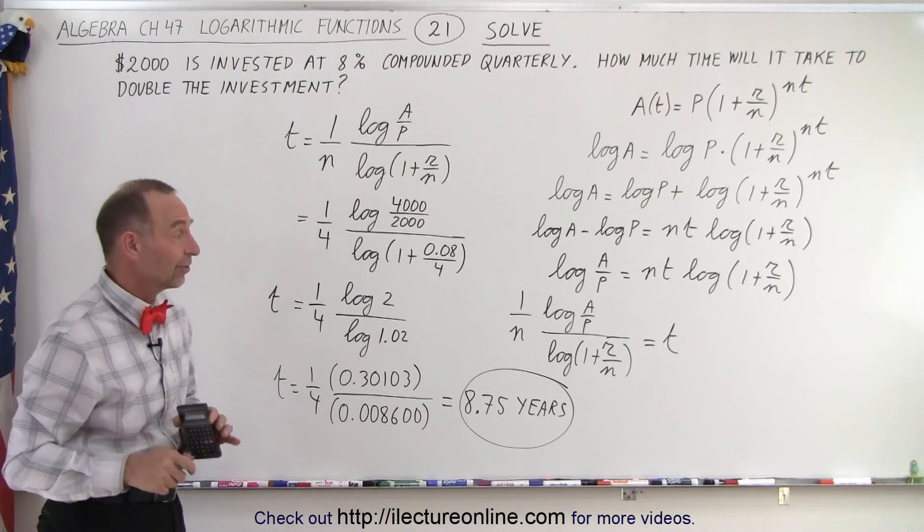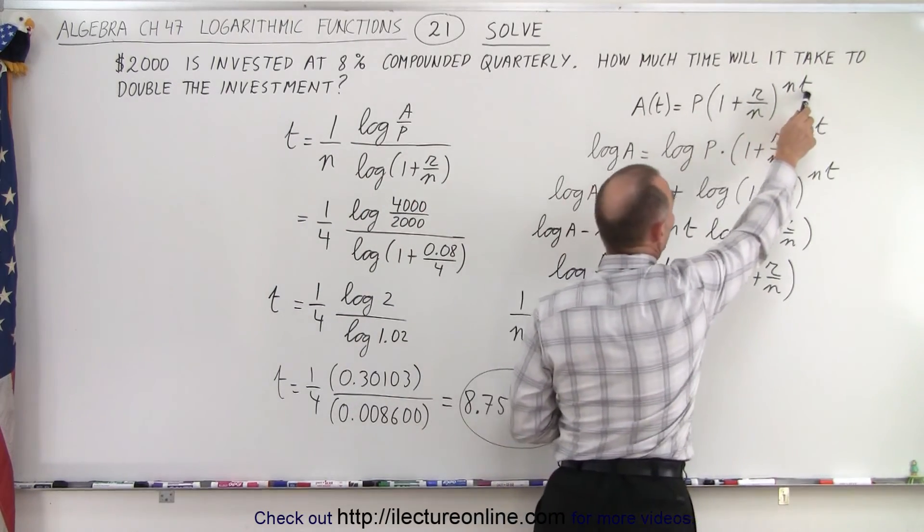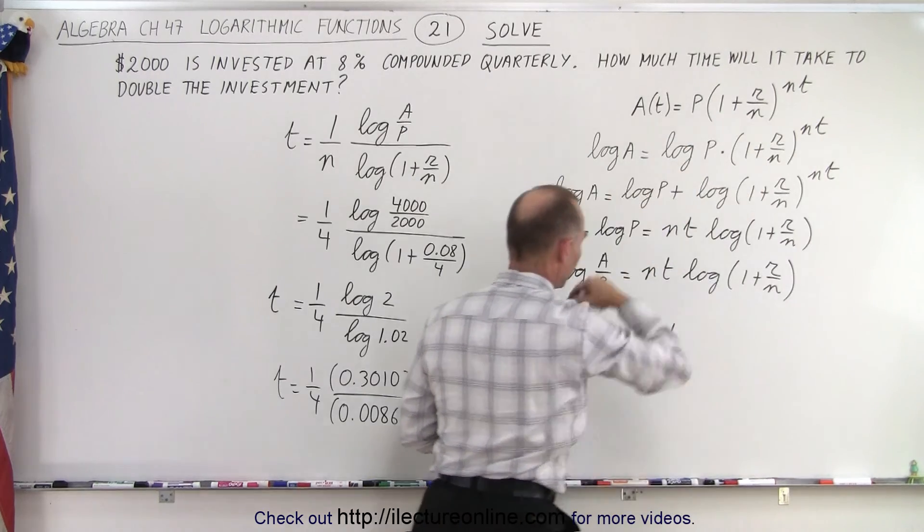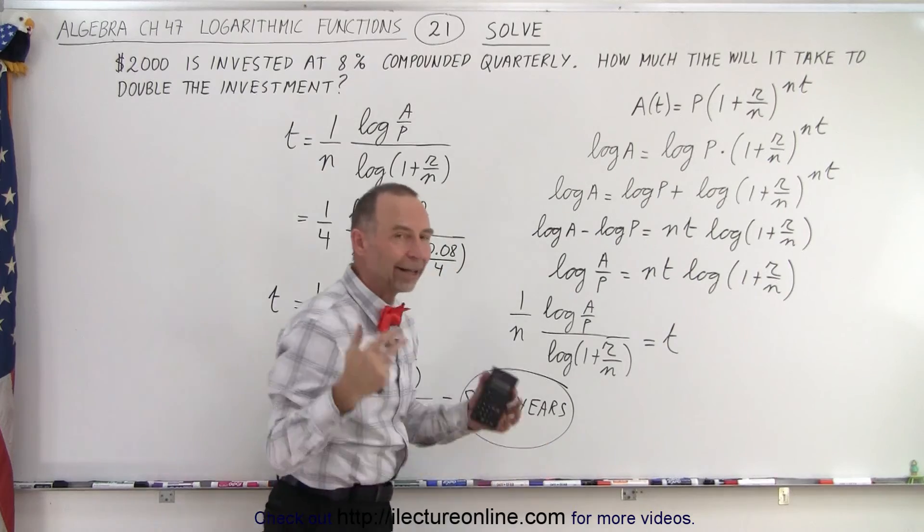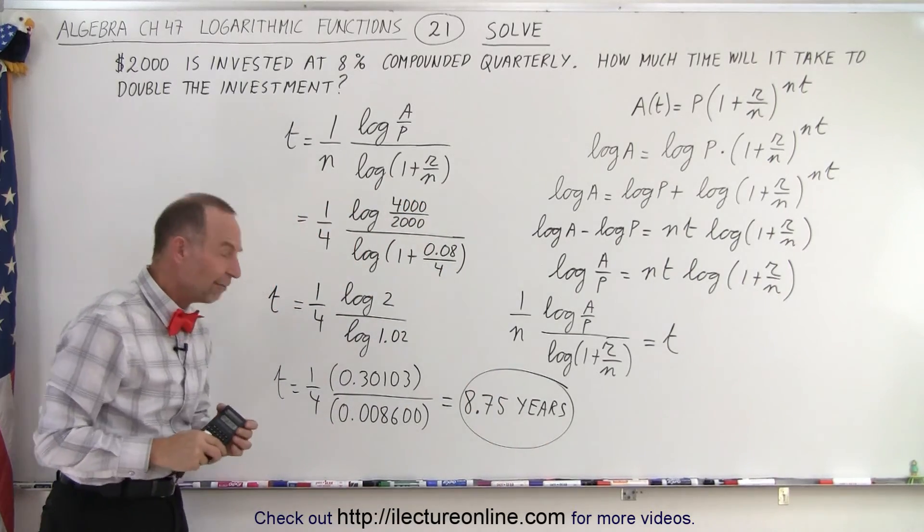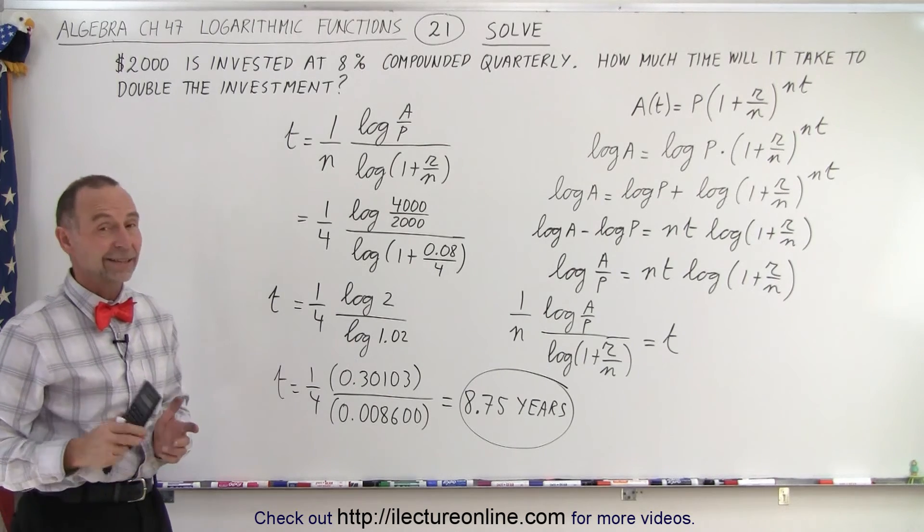Again, the beauty of this whole exercise is that we're able to take an equation that looks like this, where t is in the exponent here, use the rules of logarithms to isolate t, we just plug in all the other values, and out comes the answer: 8.75 years, the amount of time to double our investment. And that is how it's done.